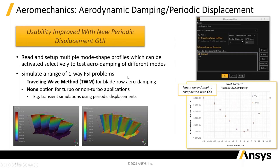Aerodynamic damping is now available. This is a one-way FSI problem where you look at the modes and see whether they're going to damp out and what the damping factor is. You can see a comparison of the damping factor versus mode number, and Fluent and CFX are giving essentially identical answers. That's another technology that has come across.